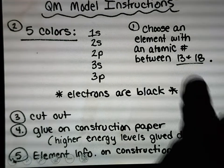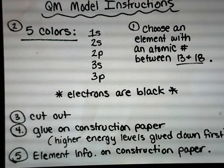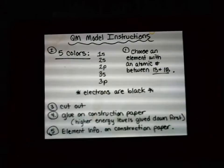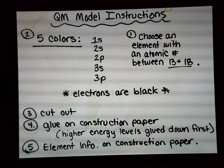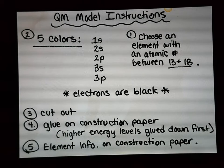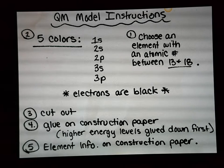You'll choose an element with an atomic number between 3 and 8. Let me zoom this out a little bit. Electrons are going to be black on this model. This is just the overview - you'll be cutting them out, gluing them on construction paper later, and then element info will be put onto the construction paper.